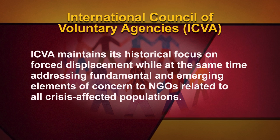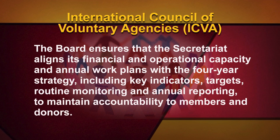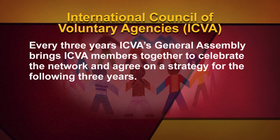ICVA promotes a rights and need-based approach, and maintains its historical focus on forced displacement while at the same time addressing fundamental and emerging concerns of NGOs relating to all crisis-affected populations. The ICVA governing body, the board, is elected by the General Assembly which meets once every three years. The board ensures that the Secretariat aligns its financial and operational capacity and annual work plans with the four-year strategy, including key indicators, targets, routine monitoring and annual reporting to maintain accountability to members and donors. Every three years, ICVA's General Assembly brings members together to celebrate the network and agree on strategy for the following three years, and to elect a new board and chair.